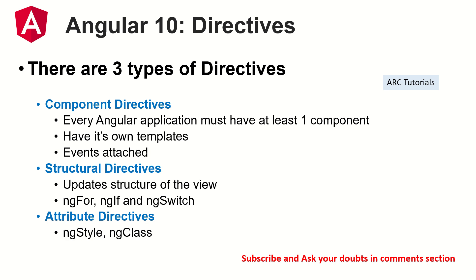The next one is structural directives — anything that updates the structure of the template, view, or page. For example, ngFor will add more elements or may delete elements. ngIf may toggle the view. ngSwitch, based on a certain condition, will display an element or not. These are all called structural directives because they change the structure of your view or template. Next are attribute directives — things like ngStyle and ngClass. We can also extend these by writing custom directives.